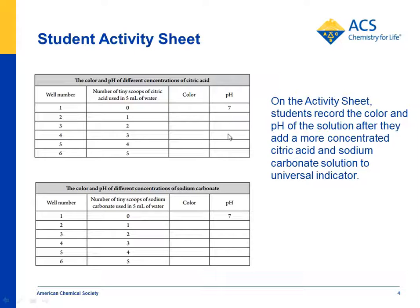That's sort of counterintuitive for kids — that the more acidic the solution has a lower pH. And the more base they add to their solution, they'll get a higher and higher number on the pH scale as it goes toward purple.